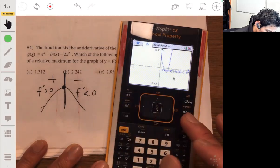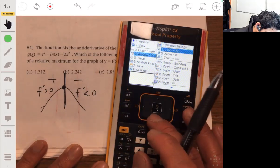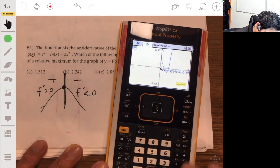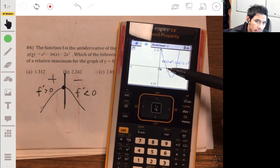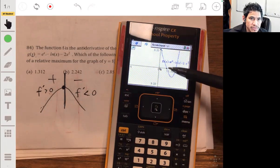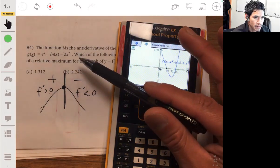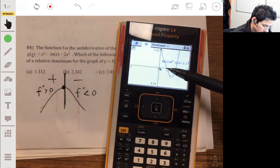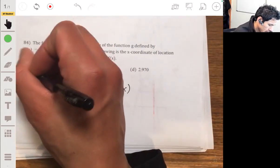So here's our graph. Let me see if I can zoom in. So you zoom in and you can see that the graph changes from positive to negative at about 1.31. That's this graph g of x, and so the relative maximum is going to be right there. So the answer is A.